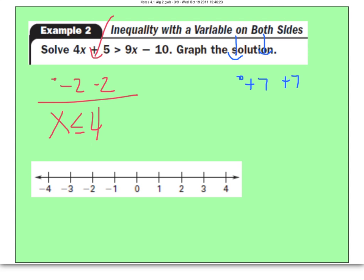Now don't switch the inequality symbol because we're minusing. Minusing is fine. It's just multiplying and dividing by a negative. So it'll be negative 5x plus 5 is greater than negative 10. Now to get x by itself, let's move the plus 5 as minus 5. Again, that minus is not going to make me flip the symbol.